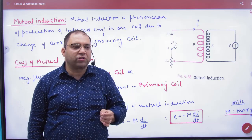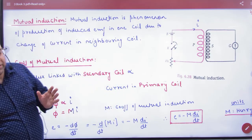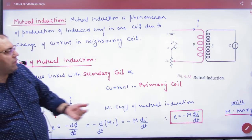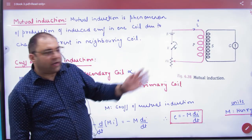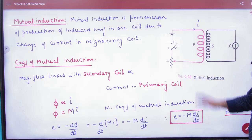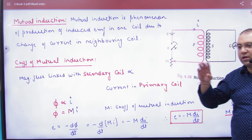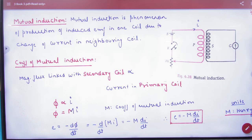In mutual induction, there are two coils. In one coil — one solenoid — I will pass the current here, and increase or decrease it as I want. So I will increase the current here. When I increase the current, the magnetic field will increase.